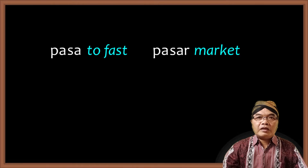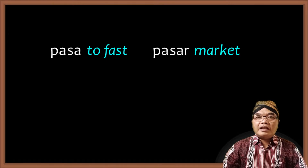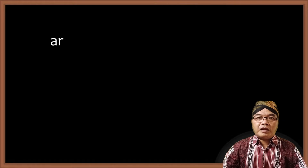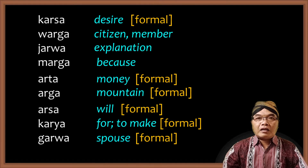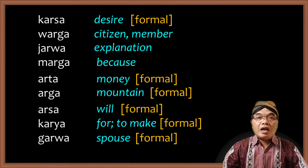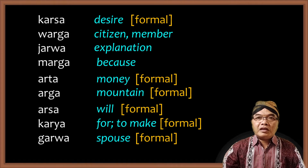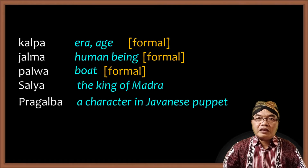Now that rule does not apply when the penultimate syllable has an R sound, because A followed by R is always pronounced AR no matter if it's final or penultimate. For example: KARSO not KORSO, WARGO not WORGO, JARWO not JORWO, MARGO not MORGO, ARTO not ORTO, ARGO not ORGO, ARSO not ORSO, KARYO not KORYO, GARWO not GORWO.